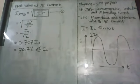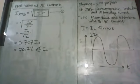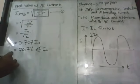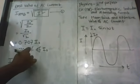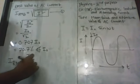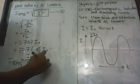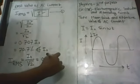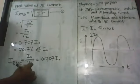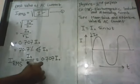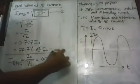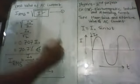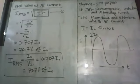So the full equation for the RMS value or effective value of AC current is: I_rms = I₀/√2 = 0.707 I₀ = 70.7% of I₀. These are the detailed formulas for the RMS value or effective value of AC current.